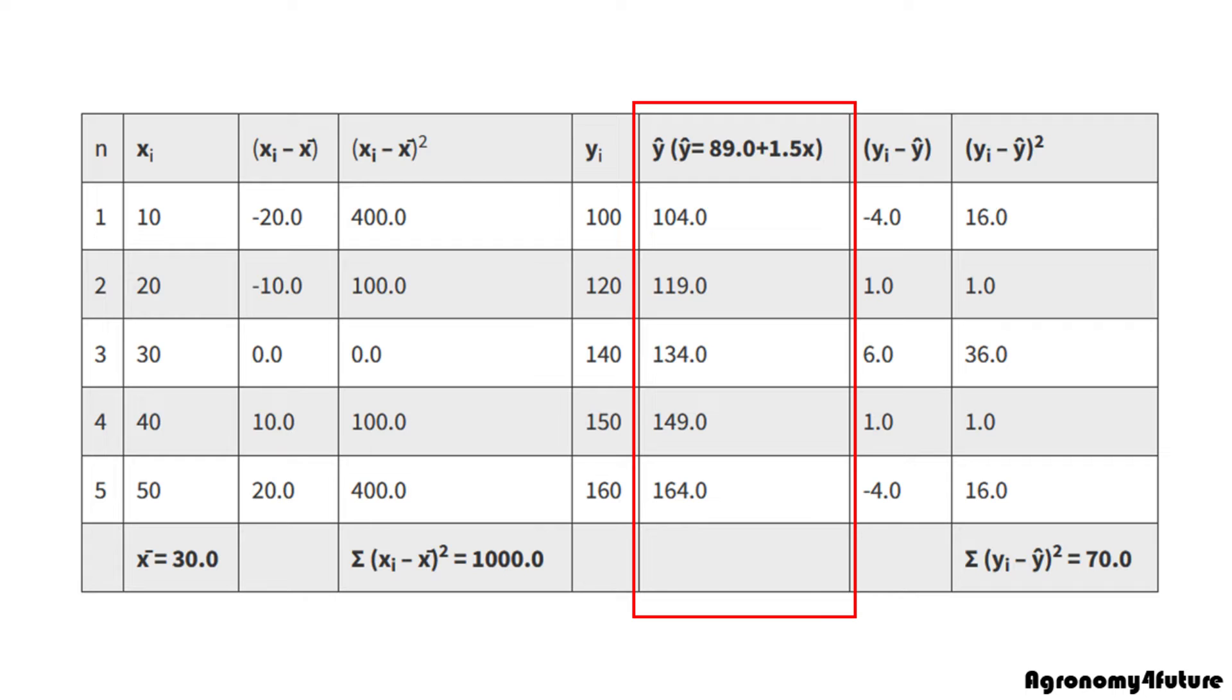According to the equation, y is 89.0 plus 1.5x. Second, let's calculate the difference between y and expected y. This is deviation.